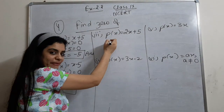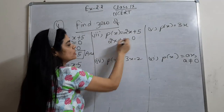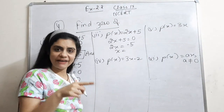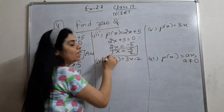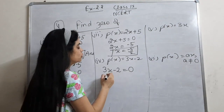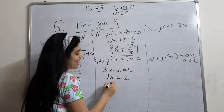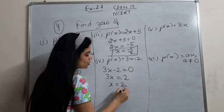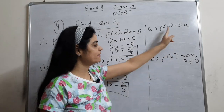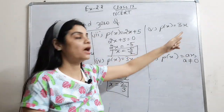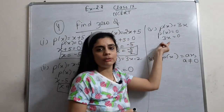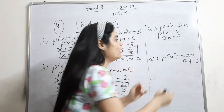Third part: 2x + 5 = 0, so x = minus 5/2. Fourth part: 3x minus 2 = 0, so 3x = 2, meaning x goes to the other side and 3 goes to the denominator, giving x = 2/3. Now for p(x) = 3x: set 3x = 0, so x = 0/3, and zero divided by something is zero.